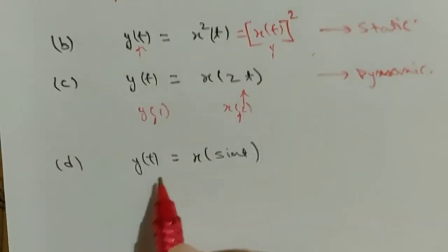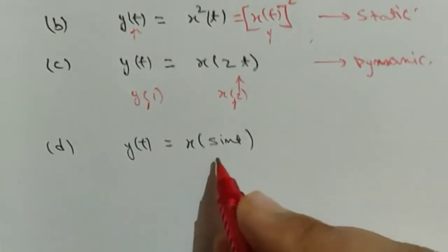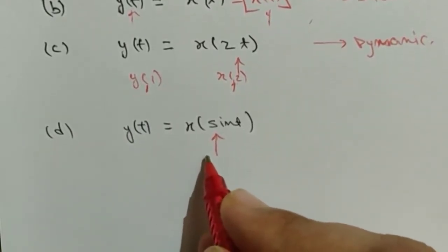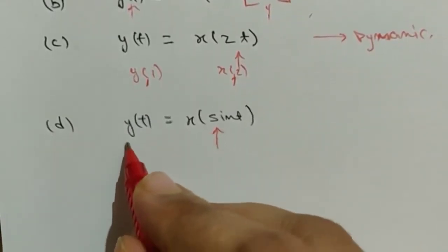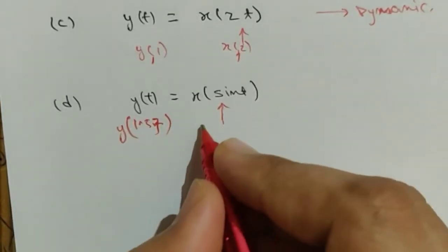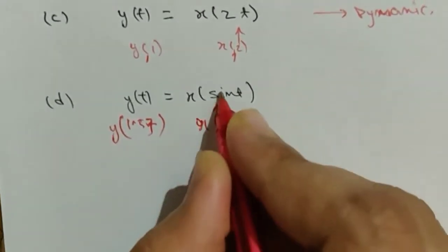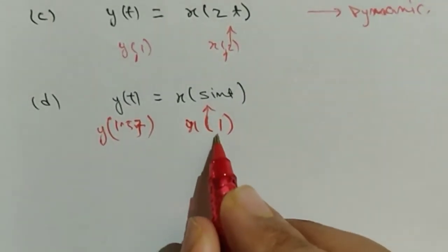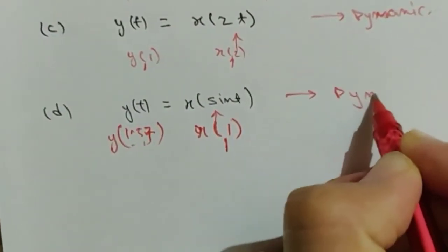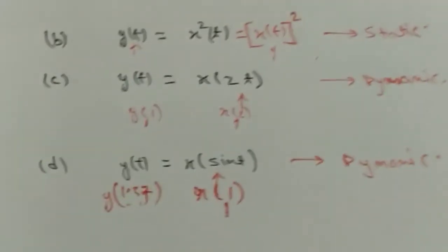Next question: y(t) = x(sin t). Put t = π/2 (≈1.57): sin(π/2) = 1, so you get x(1) evaluated when t = 1.57. The output is dependent on past values of the input. Therefore this is a dynamic system.